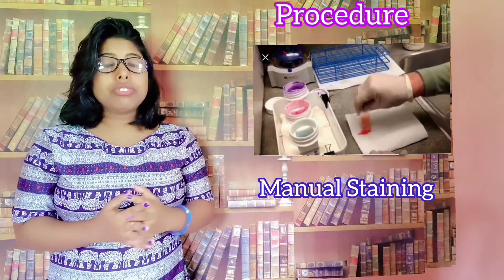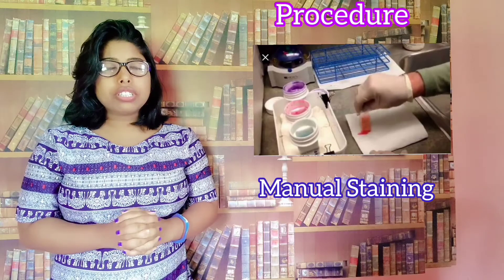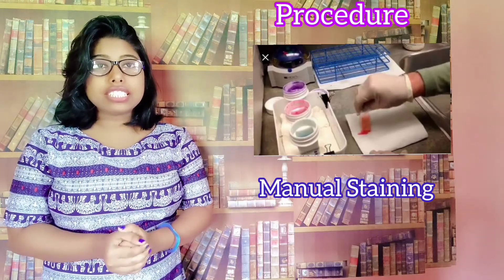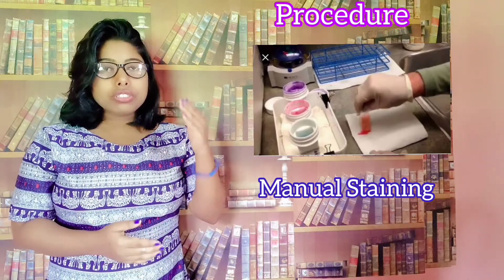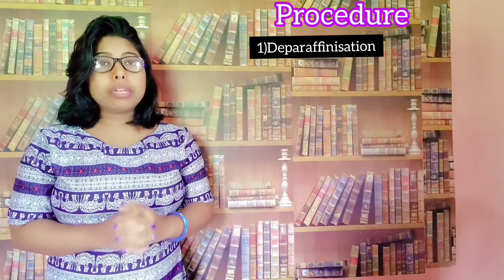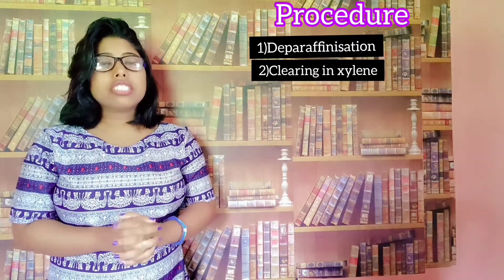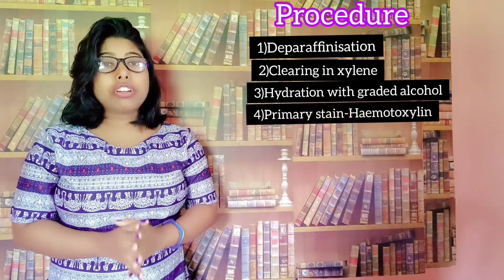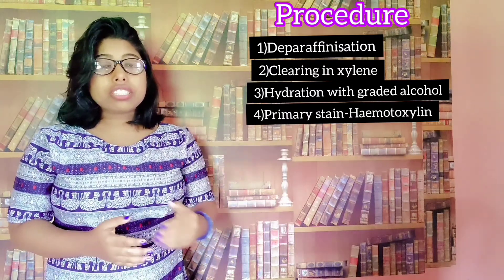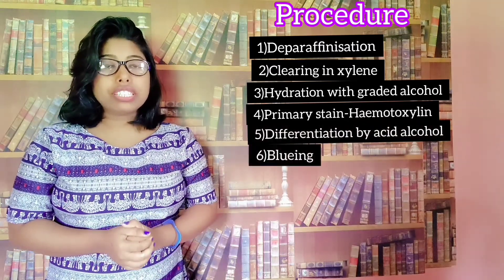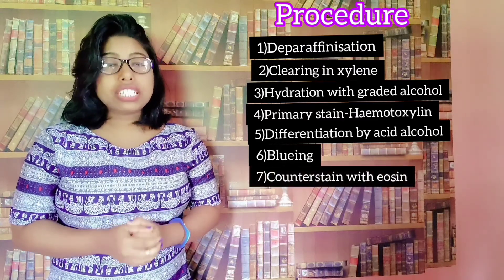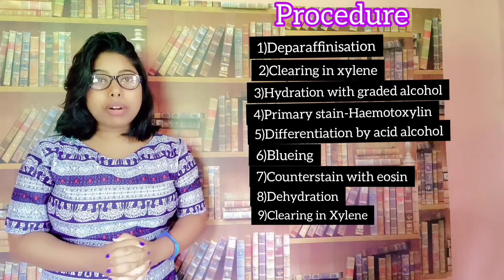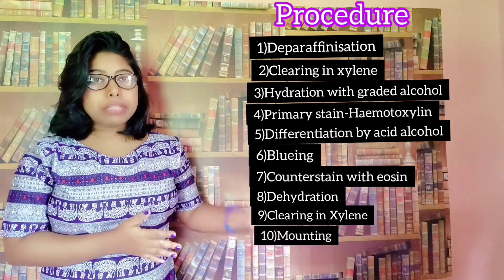We will discuss the 10 steps in the procedure. If you remember the 10 steps, it will be easy for you to write the staining procedure. I will explain the subject first so that you will understand quickly. First is deparaffinization or de-waxing — removal of wax. Second, clearing in xylene. Third, hydration with graded alcohol. Fourth, the main staining — addition of hematoxylin or the primary stain. Fifth, differentiation. Sixth, bluing. Seventh, addition of eosin. Eighth, dehydration. Ninth, clearing in xylene. Tenth, mounting with DPX.